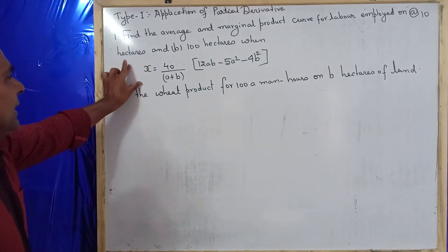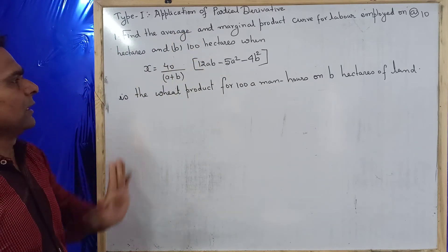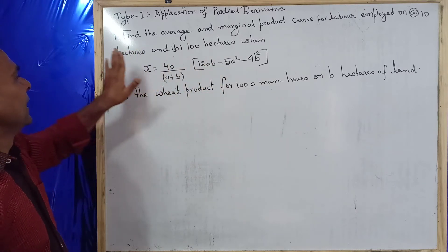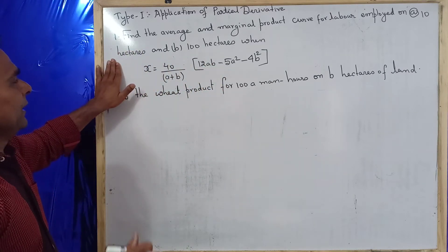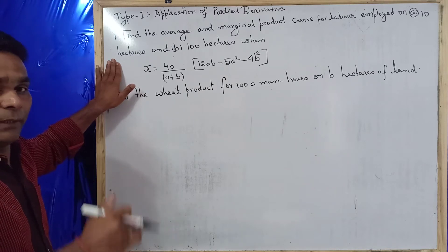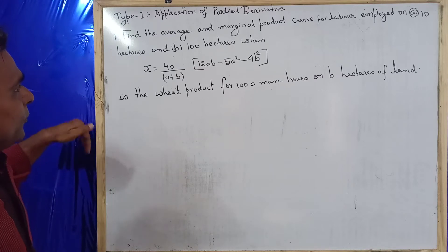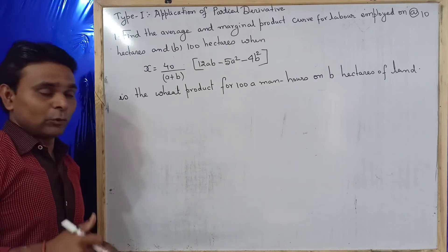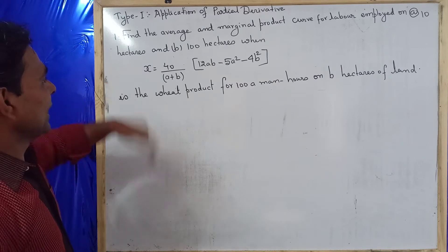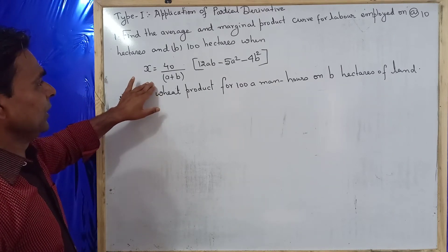So the production function has been given, and we need to find the average and marginal product. What will be the value of APA and MPA — that means average productivity and marginal productivity — when B equals 10?